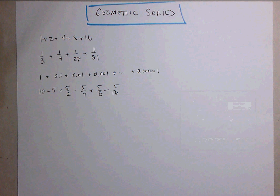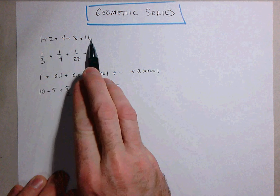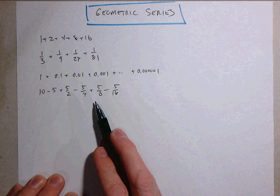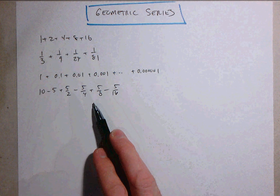Hi everyone. This is an introduction to geometric series. So a series is a sum of a sequence and in each of these examples the underlying sequence is a geometric sequence which makes these geometric series.